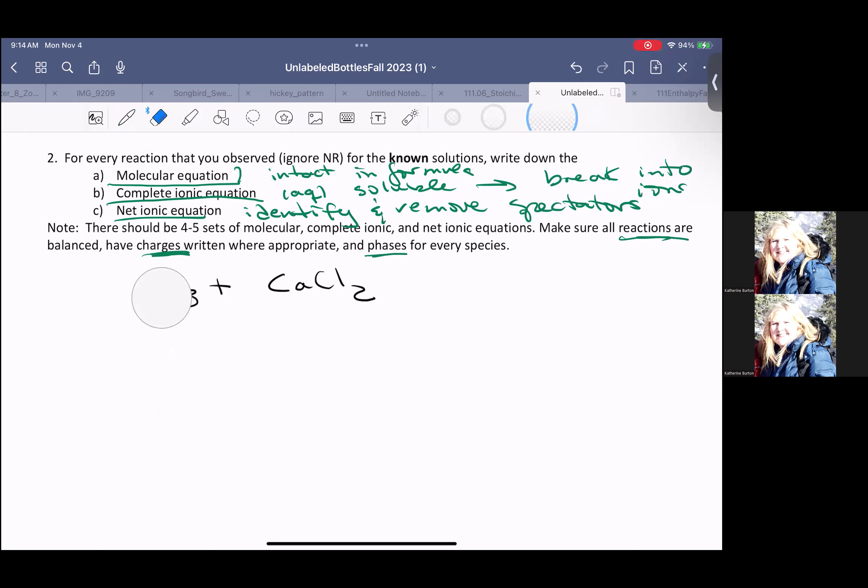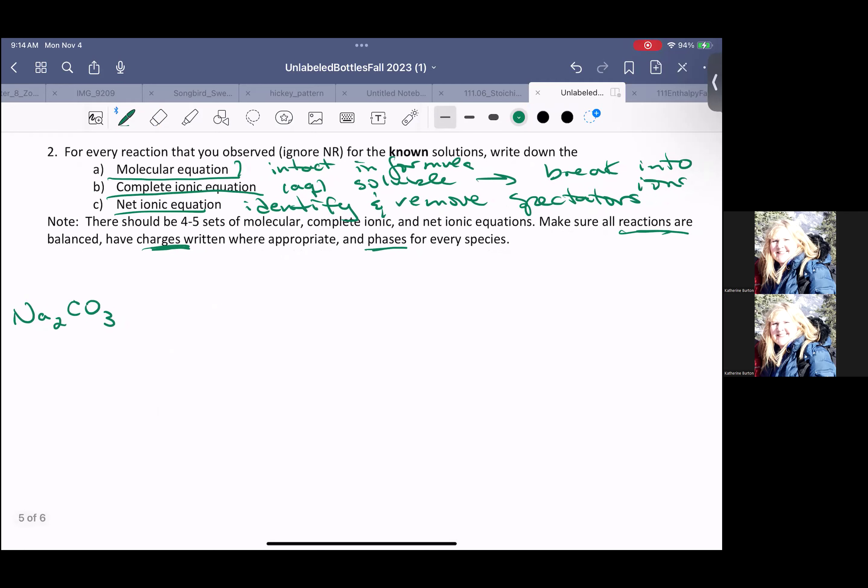So if I start out with sodium carbonate and calcium chloride, so I have sodium carbonate. Now when they say that we need to make sure that we have all the phases, that means we have to look back to our solubility rules.